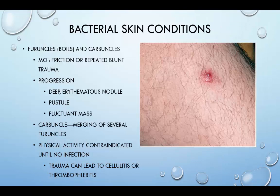Furuncles are infections that progress deeper and extend out from a follicle. The common mechanism is repeated friction or repeated blunt trauma to an area. It typically progresses to a deep erythematous nodule, a pustule, and then a fluctuant mass. A carbuncle is the merging of several furuncles. Physical activity is contraindicated for individuals suffering from this bacterial skin condition until no infection is noted. Trauma can lead to cellulitis or thrombophlebitis. Common sites include the buttocks, back of the neck, face, and axilla. Treatment requires several weeks of systemic antibiotic therapy and may include immobilization, incision, drainage, and in severe cases, hospitalization.